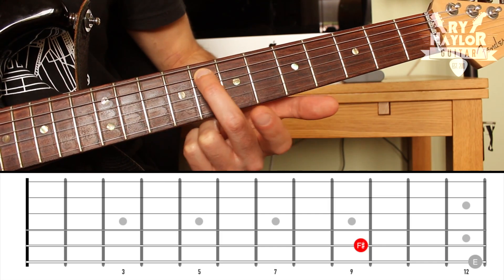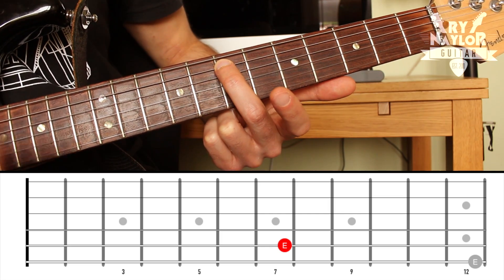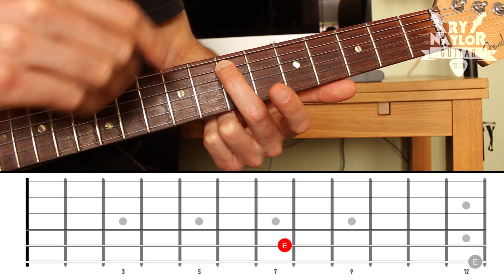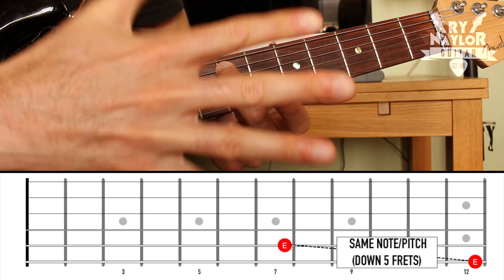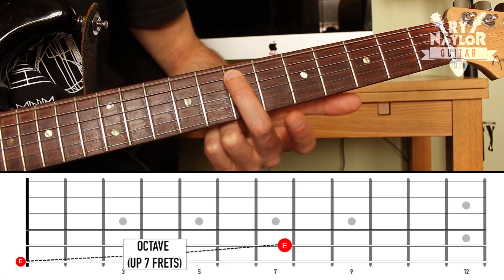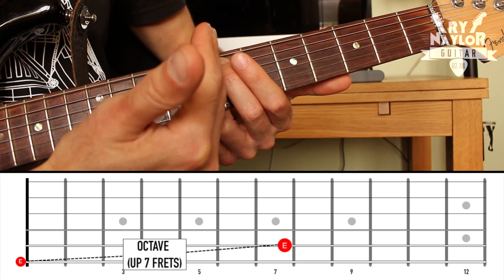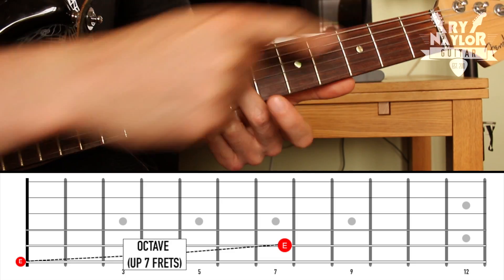And I'm going to go back five frets. One, two, three, four, five. So you can find the exact same note on the string below if you go back five frets. So that is an octave on adjacent strings. We're up seven frets from the lower note.